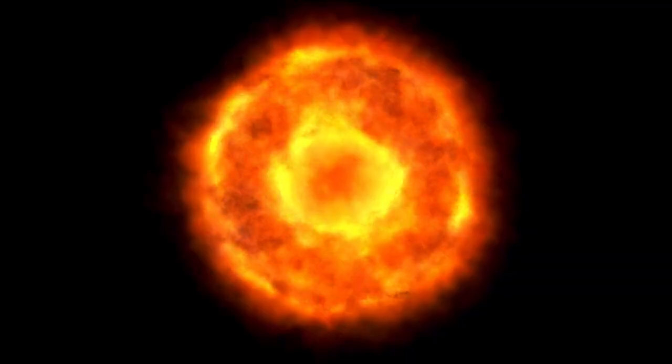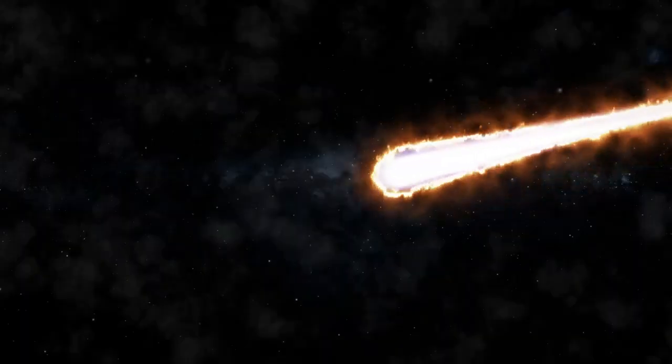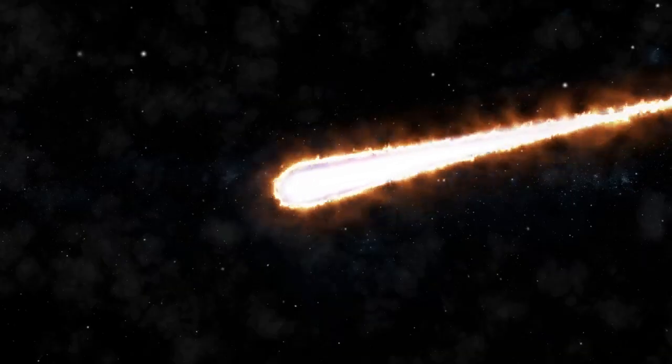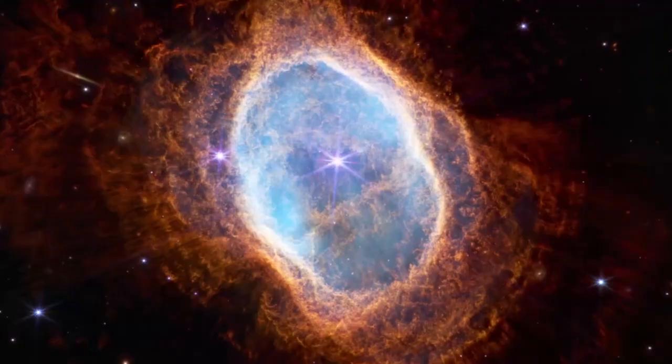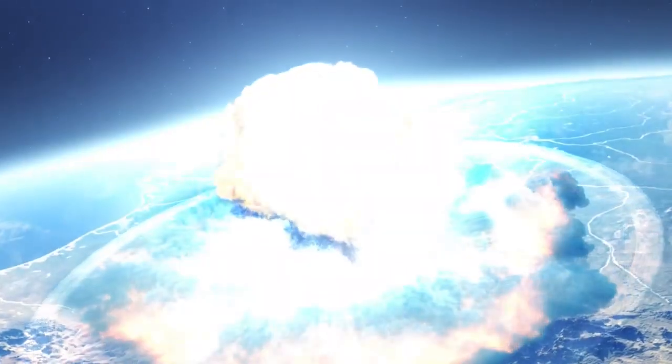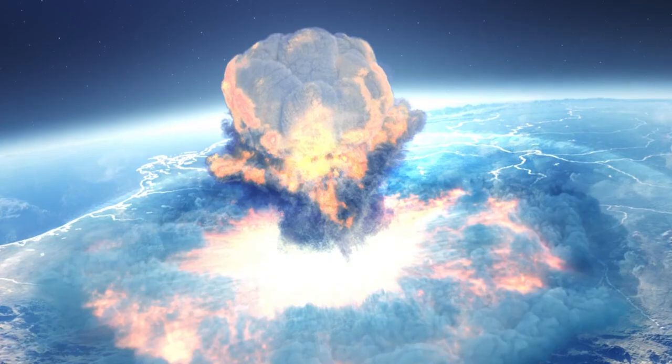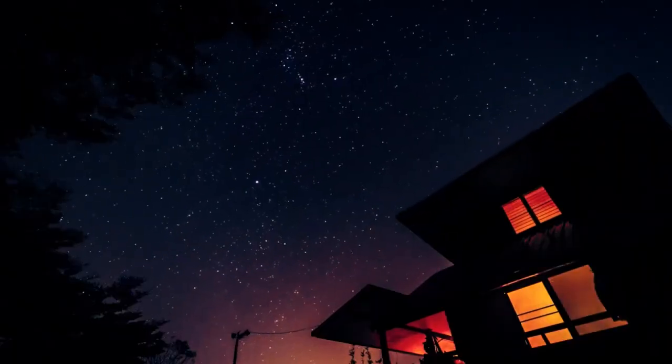Betelgeuse, also known as Alpha Orionis, is one of the largest and brightest stars in the night sky. Located about 724 light-years away from Earth, it is part of the constellation Orion, easily recognizable by its position near the belt of three stars. This red supergiant is approximately 100,000 times more luminous than our Sun.